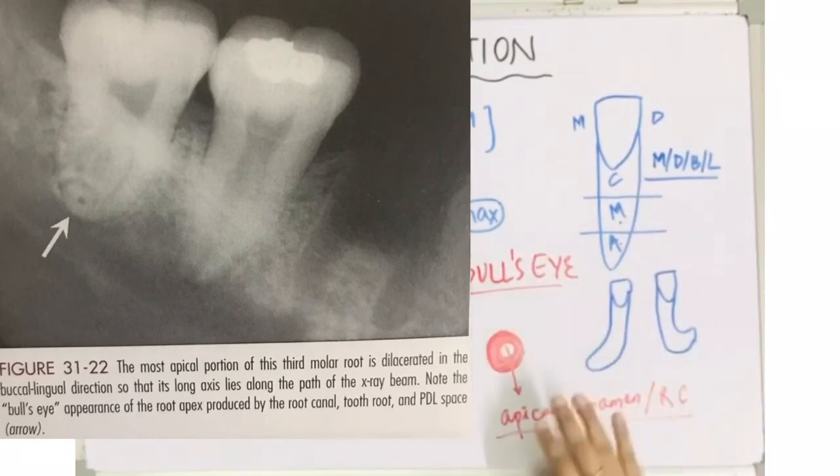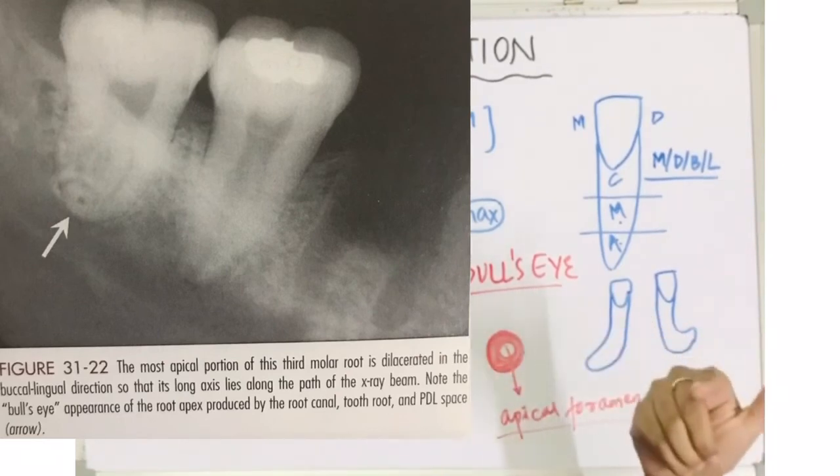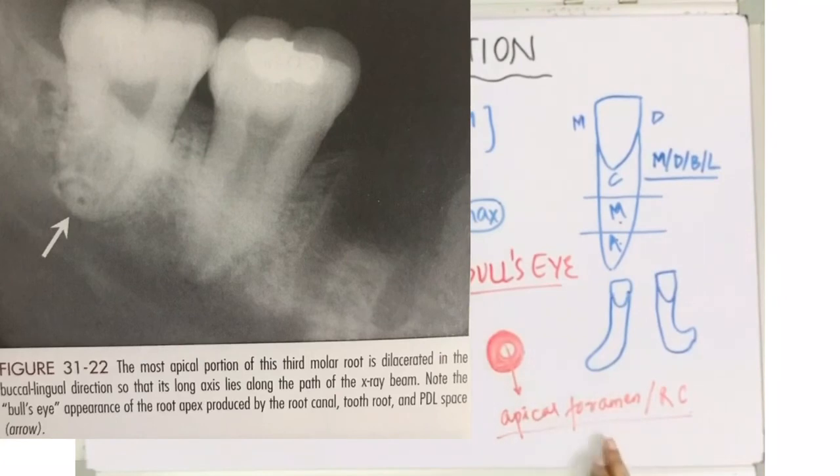But if there is buccal and lingual curvature of the tooth, then what happens is this center area, there will be a radiolucency which is surrounded by a radiopaque area. This condition, this appearance of the dilacerated tooth having buccal or lingual angulation, is known as the bull's eye appearance. It is a radiographic characteristic of dilacerated tooth.